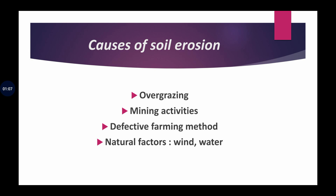First is overgrazing. Overgrazing methods include improper mining where open pits cause soil removal. Next is defective farming methods, such as over-irrigation — where excessive water is applied, the soil gets removed. Excessive use of chemicals and pesticides is also a defective farming method.